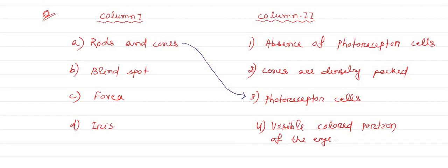Blind spot is where no light is reflected and no image is formed. That's why it is called blind spot. It is present behind the eye, that is, one portion of the retina. Blind spot is the absence of photoreceptor cells.